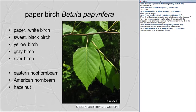Moving on to paper birch — another shade-intolerant species. Northeastern and midwestern species in the genus Betula include paper birch (white birch), sweet birch (black birch), yellow birch, gray birch, and river birch. These are in the birch family, Betulaceae, which also includes eastern hop hornbeam (Ostrya virginiana), American hornbeam (Carpinus caroliniana), and hazelnut (genus Corylus, with two species).